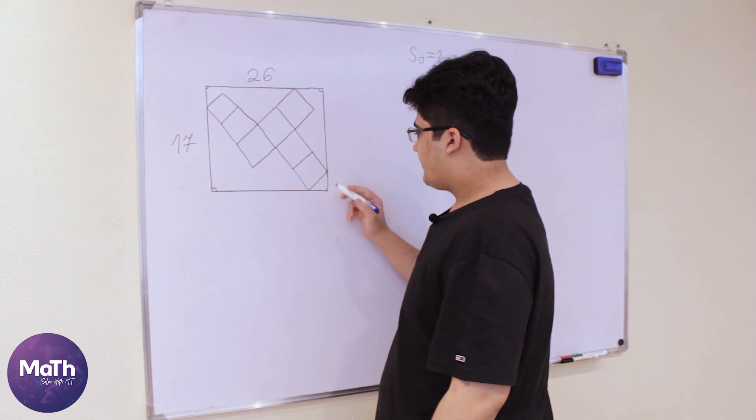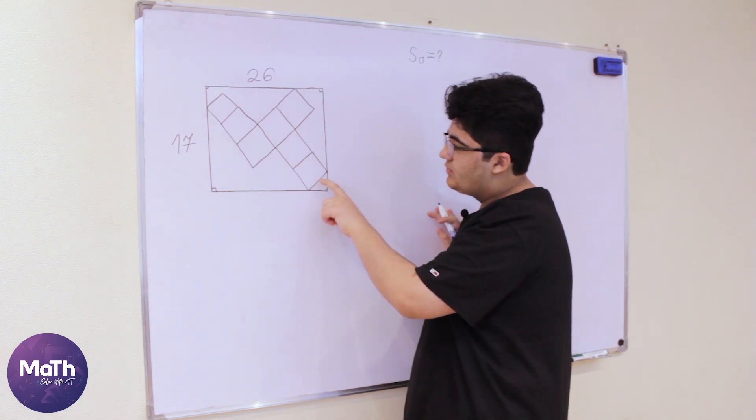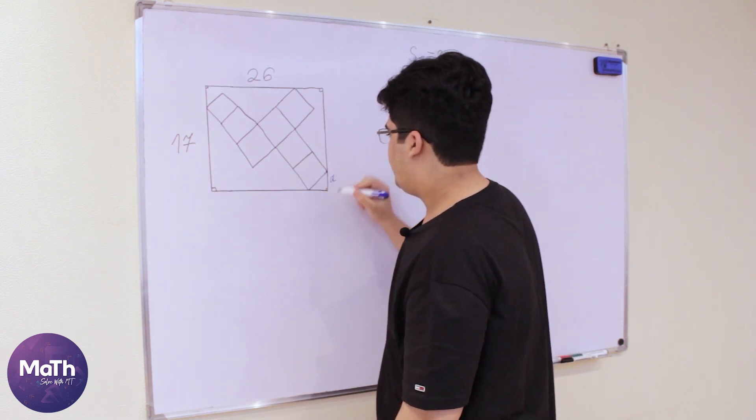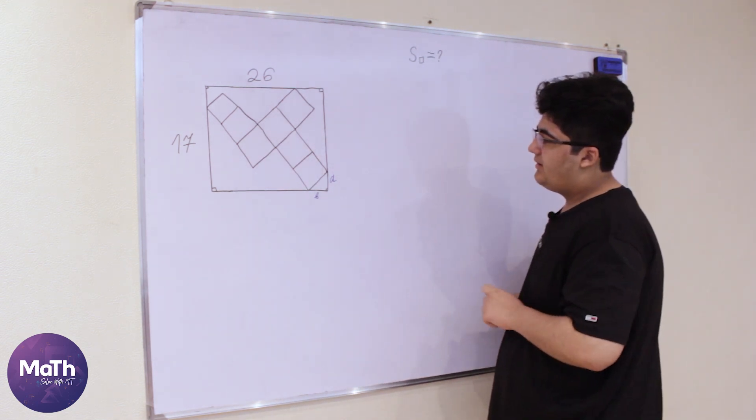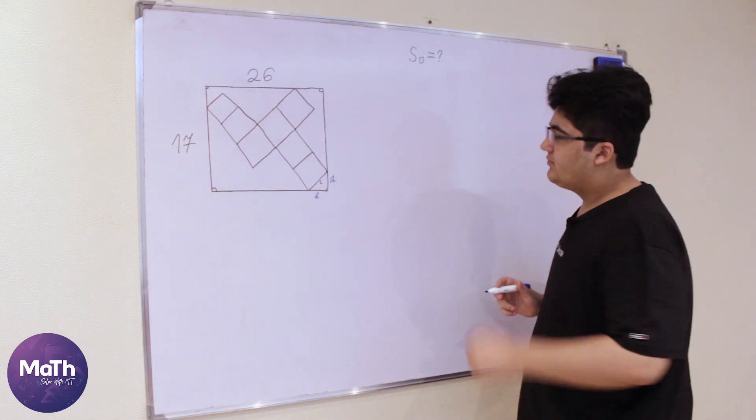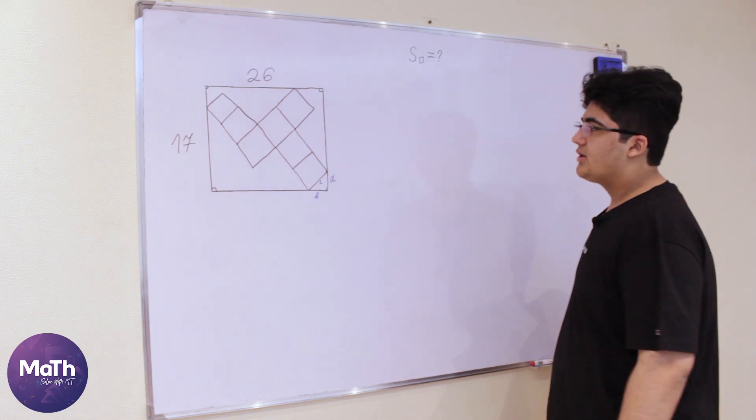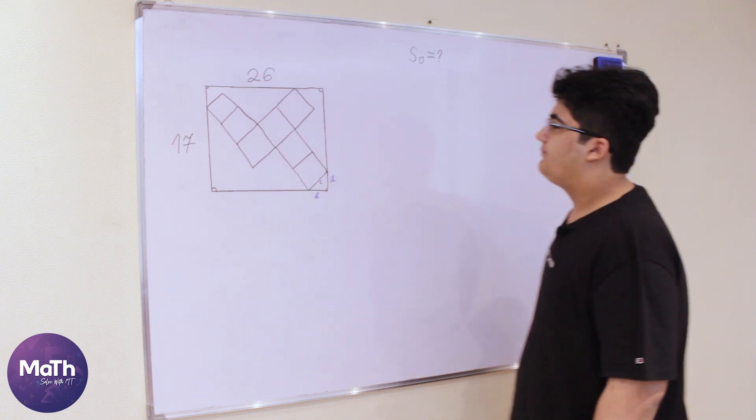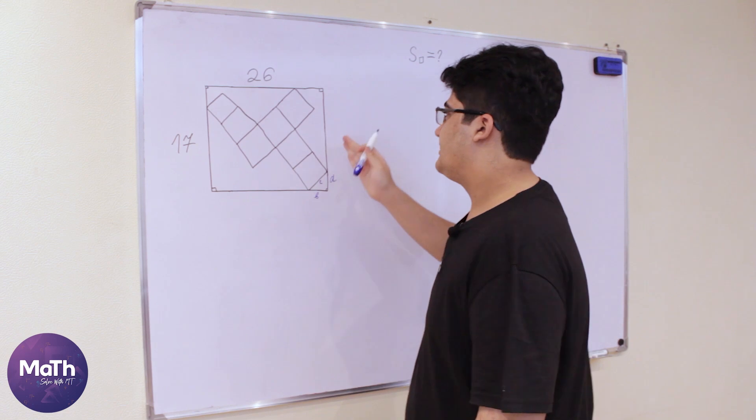We can see here a right triangle with hypotenuse equal to the side of the square. Let's say that this side will be a and this side will be b and this side will be c, and we can use those sides a and b to measure vertical and horizontal sides of this rectangle.